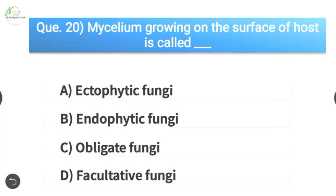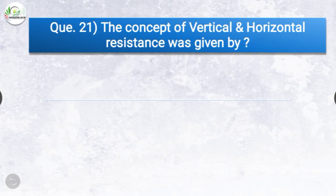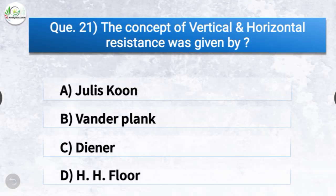Question number twenty-one: The concept of vertical and horizontal resistance was given by dash. The options are Julius Kuhn, Van der Plank, Diner, or HH Flor. The correct answer is option B, Van der Plank. The concept of vertical and horizontal resistance was given by Van der Plank, whereas HH Flor proposed the gene-for-gene hypothesis.